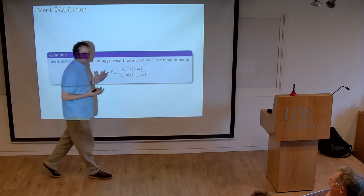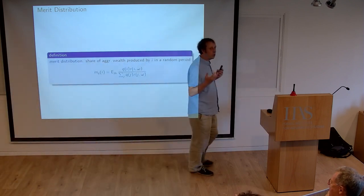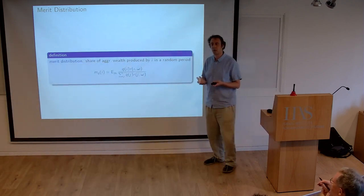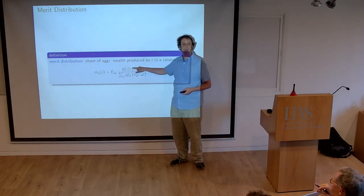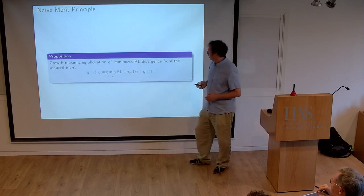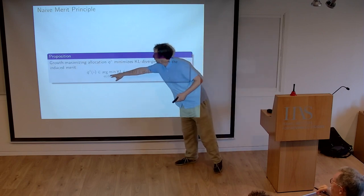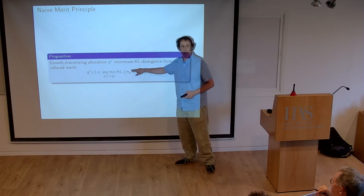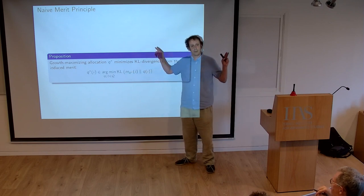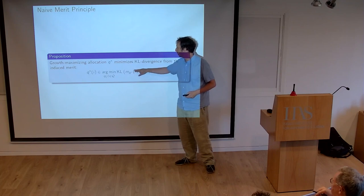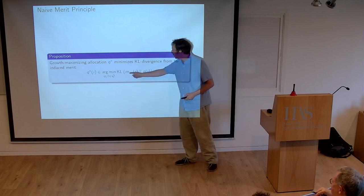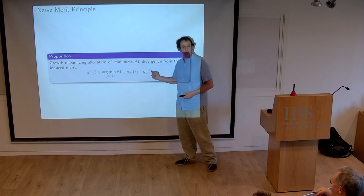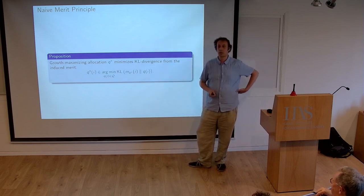The merit distribution bundles two things: people who are well treated by society produce many dollars, but it also reflects how productive those people are. If you were to change an allocation, that would change the merit distribution. But this fairness optimization takes the merit distribution as fixed — as if it were fixed at the optimal allocation — and asks which allocation would be closest to it. This is indeed an implicit fixed-point characterization of the optimal policy.